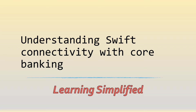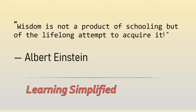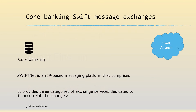Welcome back to yet another edition of Learning Simplified. This is a very interesting session in which we understand how core banking connects to Swift Alliance. Note that core banking generates a lot of messages — payment and non-payment MT and MX. So how do they get delivered to the Swift Network? That's the question which we are trying to resolve in today's session.